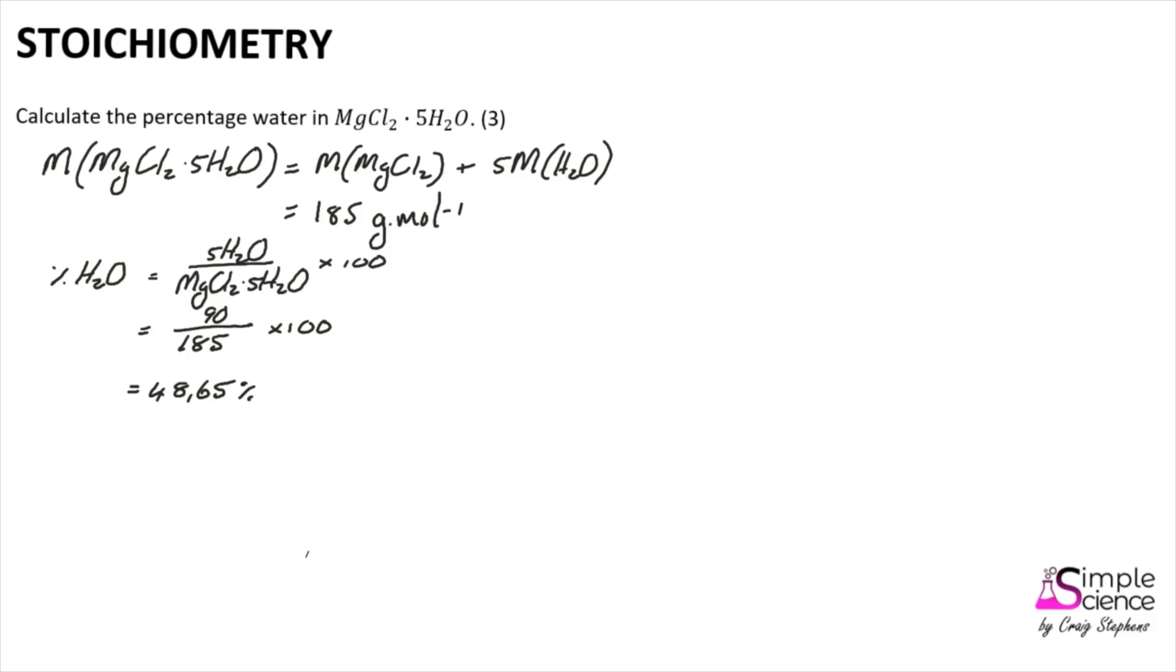This would typically be a three-mark question, where there's one mark allocated for calculating the molar mass of the entire molecule, one mark allocated for writing down a formula that explains how this is going to be approached, and then one mark for the final answer.